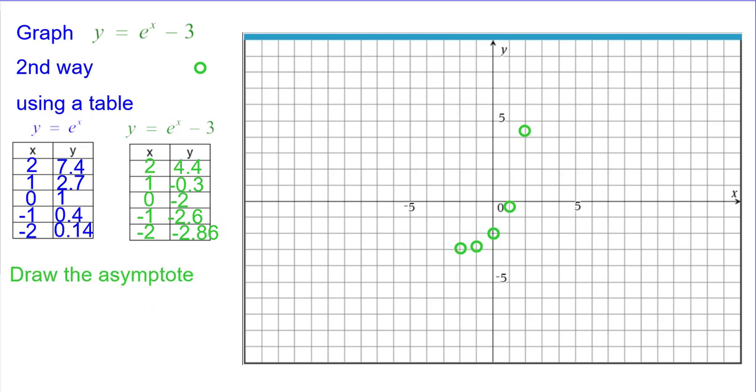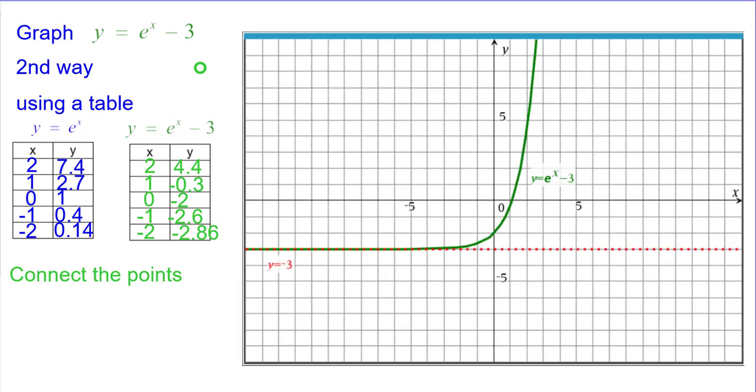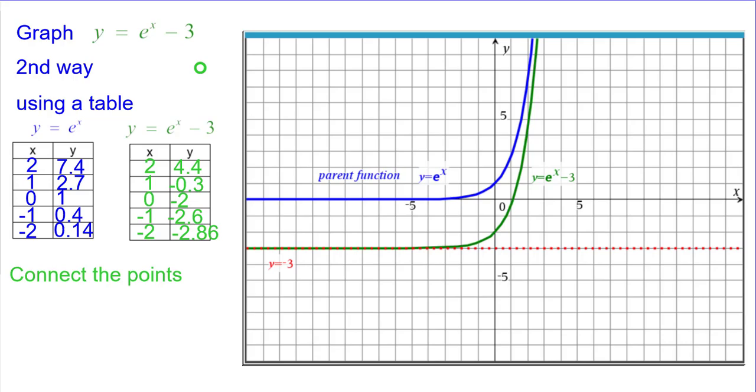We'll draw on the asymptote. Again, in this case, it's going to be at y equals negative 3. All points are shifted down 3 units. Connecting the points to make it look like the exponential function, this is what we get. And again, just to compare it to the parent function. We'll see you later.